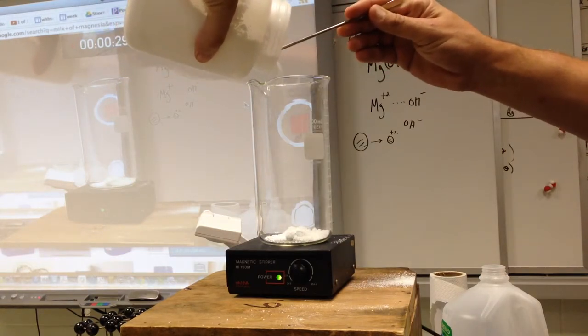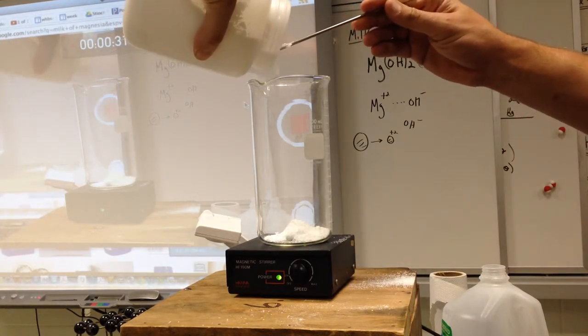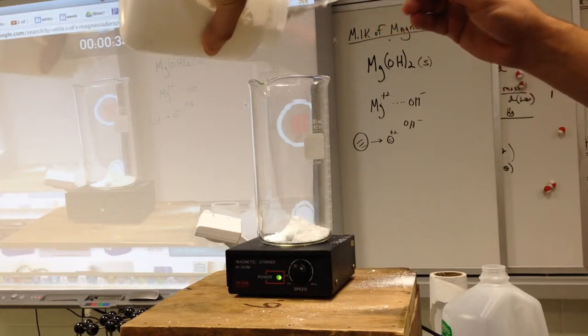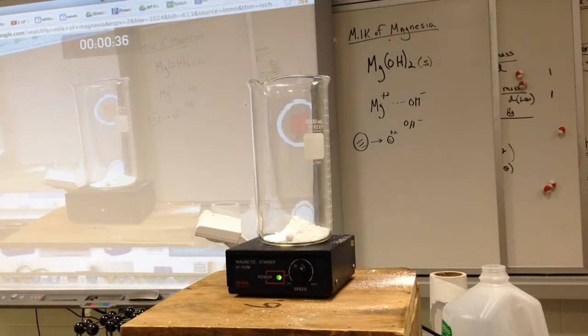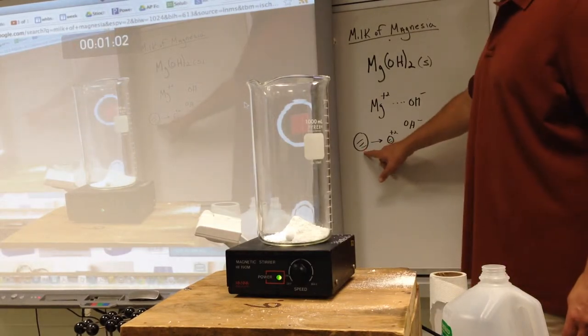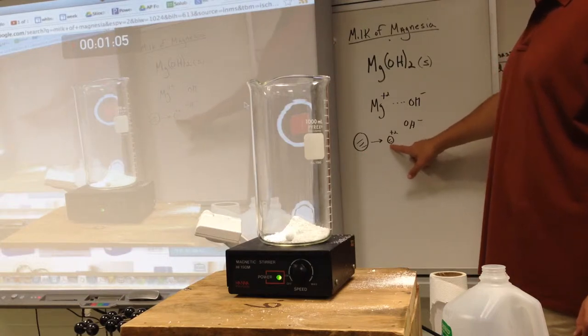So I'm going to add some of this white powder. You'd expect it to be soluble or insoluble? Magnesium hydroxide. Why would you expect it to be soluble? Because all powders are soluble? What's the charge of magnesium? Plus two. And when magnesium becomes plus two, it loses or gains how many electrons? Loses two electrons. And when it does so, does it get bigger or smaller?